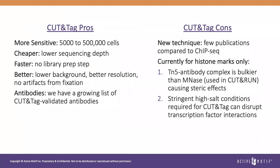Now we'll look at the pros and cons of Cut-and-Tag. It is more sensitive, cheaper, faster, and better than previously existing chromatin analysis techniques, and we have a growing list of Cut-and-Tag validated antibodies. However, the drawbacks are that it's a new technique with few publications, and it currently doesn't work well with transcription factors. The TN5 antibody complex is bulkier than micrococcal endonuclease, which may cause steric hindrance. Also, the high-salt washes required to prevent it from giving an ATAC-seq profile can disrupt transcription factor interactions. Active Motif is currently optimizing this technique.